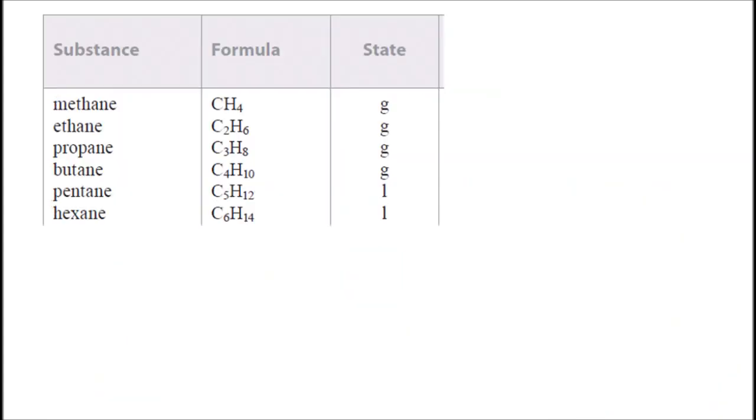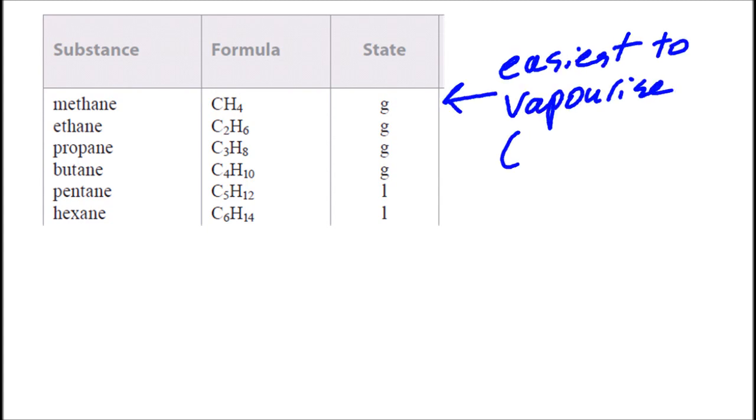This again is from a data booklet, copyright IB. These are the alkanes, and you can see that methane is the easiest to vaporise. It's the most volatile, if you will. It's already a gas. It's already turned into a gas, vaporised.